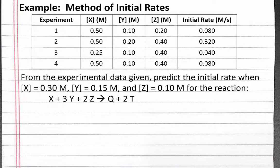In this example, we use the method of initial rates to determine the rate law for a reaction, and then predict the initial rate for different starting conditions. Our problem reads, from the experimental data given, predict the initial rate when the concentration of X equals 0.30 molar, the concentration of Y equals 0.15 molar, and the concentration of Z equals 0.10 molar, for the reaction X plus 3Y plus 2Z produces Q plus 2T.